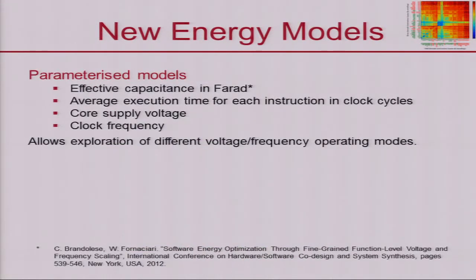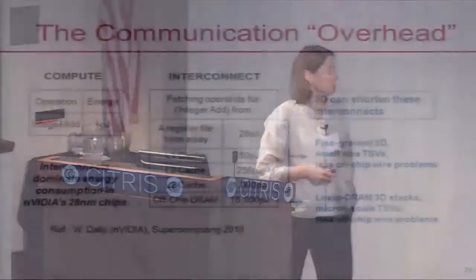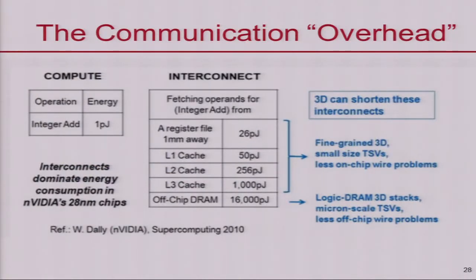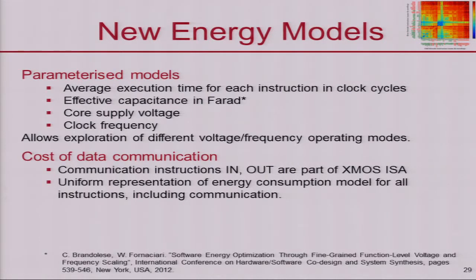We're now looking at a new energy model parametrized using effective capacitance, so that we can explore different voltage and frequency operating modes of the processor core. Data communication is really critical — the cost of communication is quite significant. If you look at the cost of computation versus the cost of communication, there's a significant increase. Communication is no longer just an overhead; it's effectively a core and very costly part of computation and has to be factored into our models. On the XCore processor, communication instructions such as 'in' and 'out' are part of the instruction set architecture and can be uniformly treated in energy modeling.